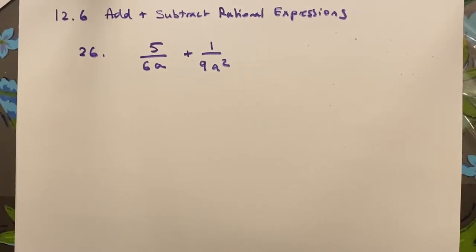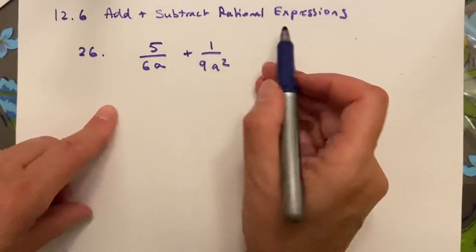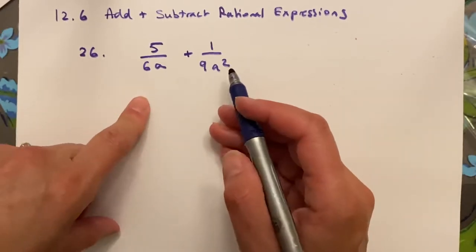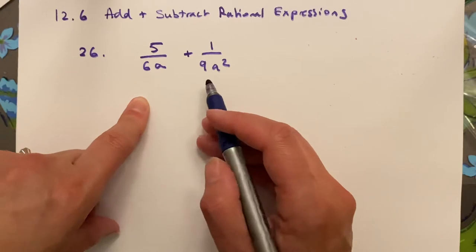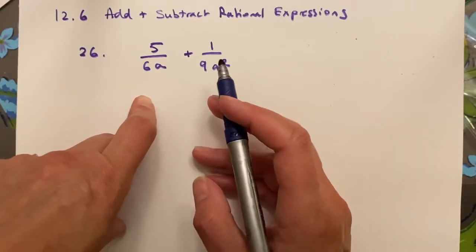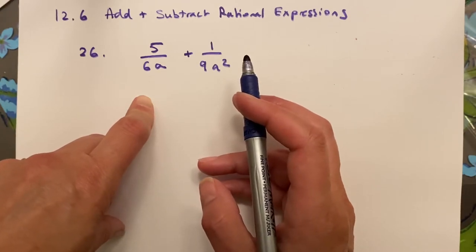This is section 12.6, adding and subtracting rational expressions. Here is where we're going to use the same thing that I talked about at the beginning, which is finding the least common denominator, which is critical because we're going to be adding and subtracting fractions.